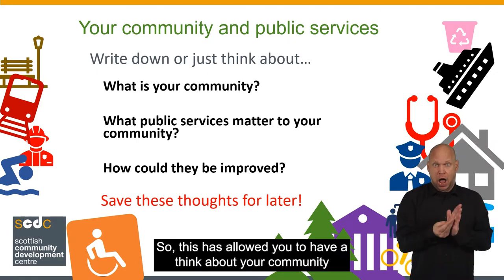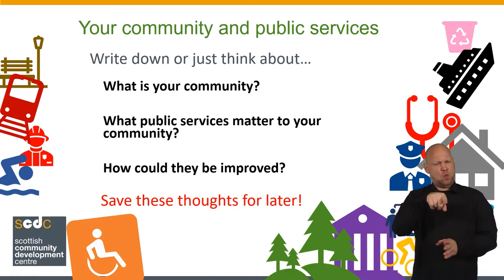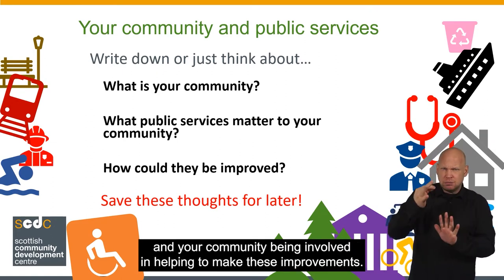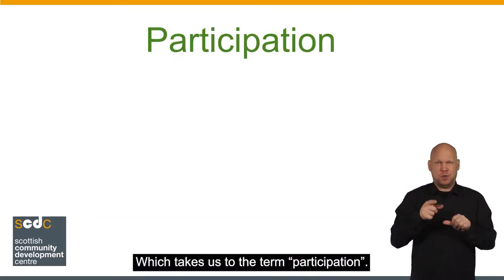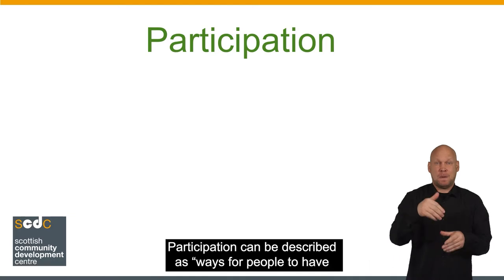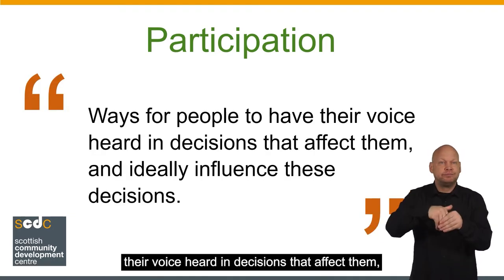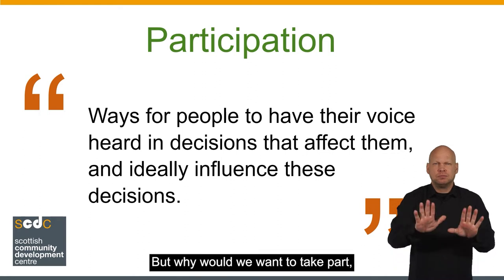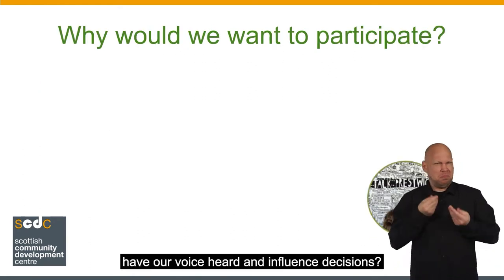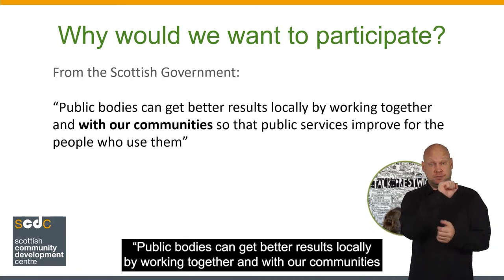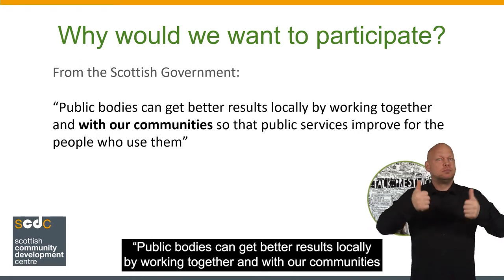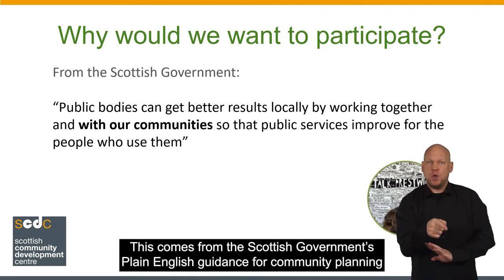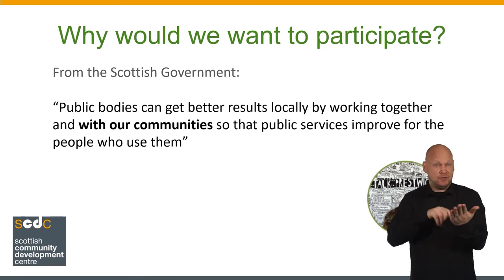So this has allowed you to have a think about your community and what public services you'd like to see improved. Now we're going to put these things together and have a think about you and your community being involved in helping to make these improvements, which takes us to the term participation. Participation can be described as ways for people to have their voice heard in decisions that affect them and ideally influence these decisions. In the Scottish Government's own words, public bodies can get better results locally by working together and with our communities so that public services improve for the people who use them. This comes from the Scottish Government's plain English guidance for community planning, which you can find online.